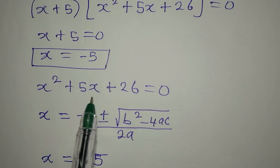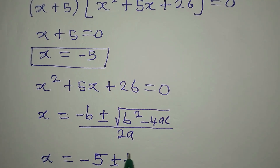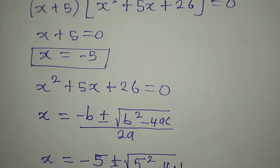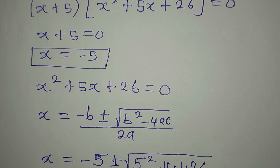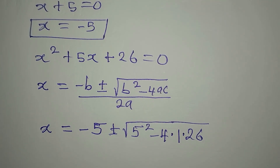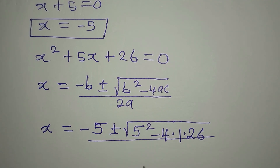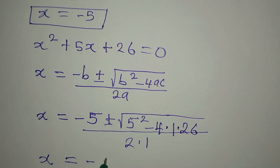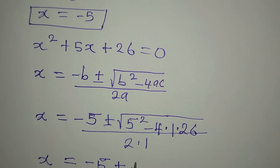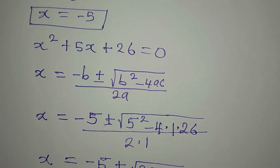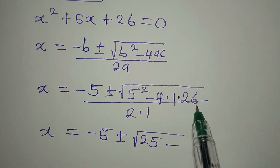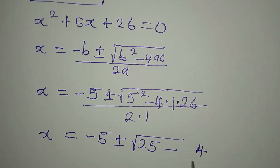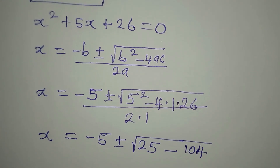Our b is 5, then plus or minus square root of 5 squared minus 4 times a times c, because c is 26 and a is 1 — a is the coefficient of x squared and c is the constant — we divide this by 2 times 1. So we have x equal to minus 5 plus or minus square root of 25 minus 4 times 26, which is 104.